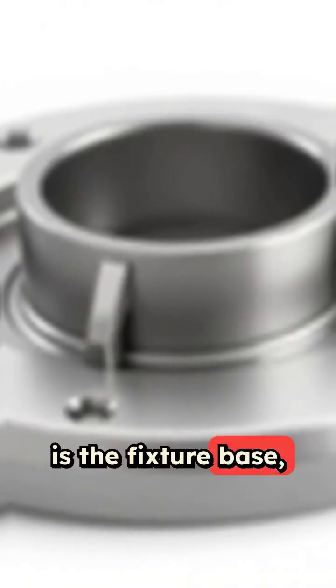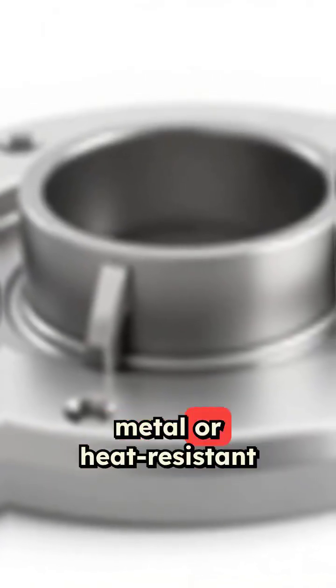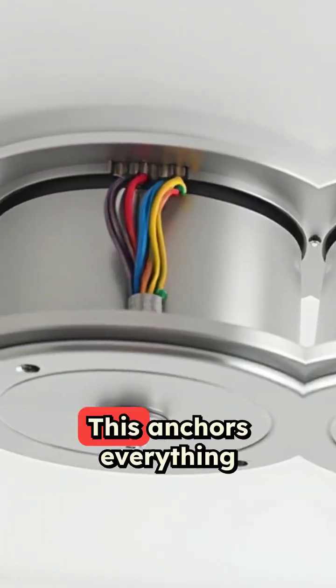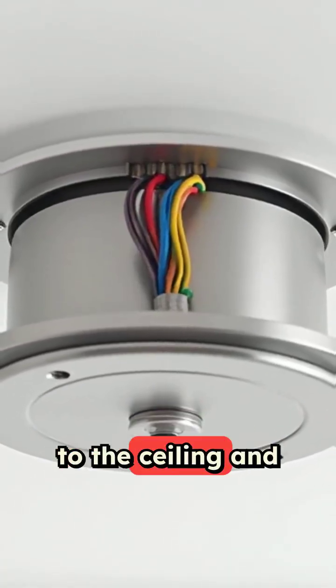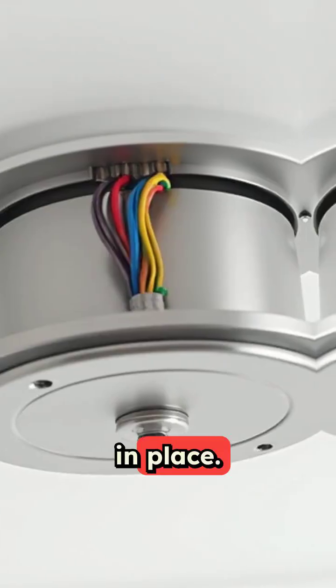The first component is the fixture base, usually made of metal or heat-resistant plastic. This anchors everything to the ceiling and holds the electrical connections securely in place.